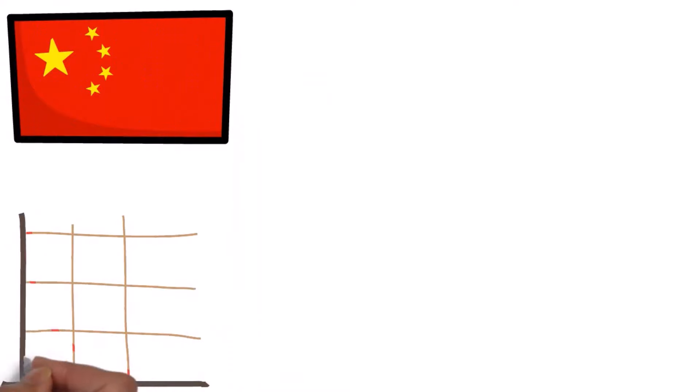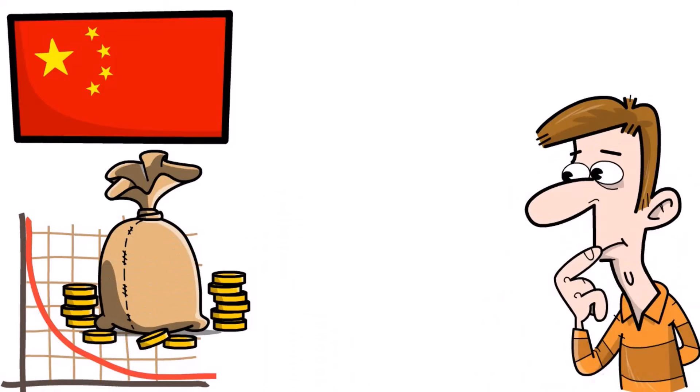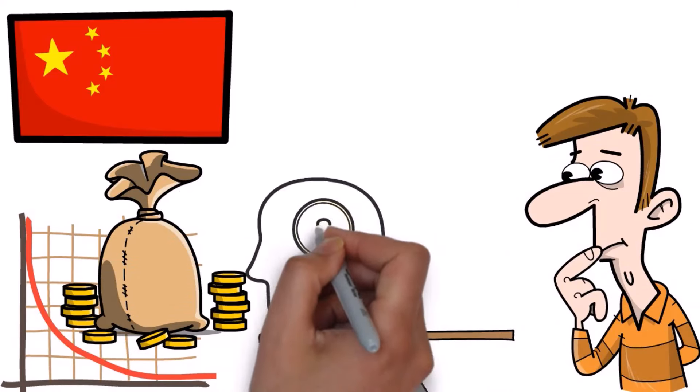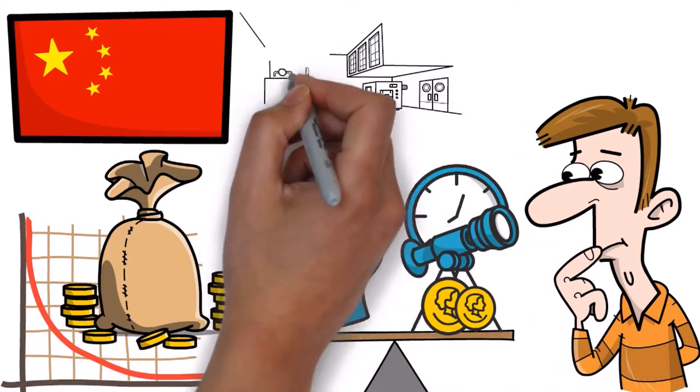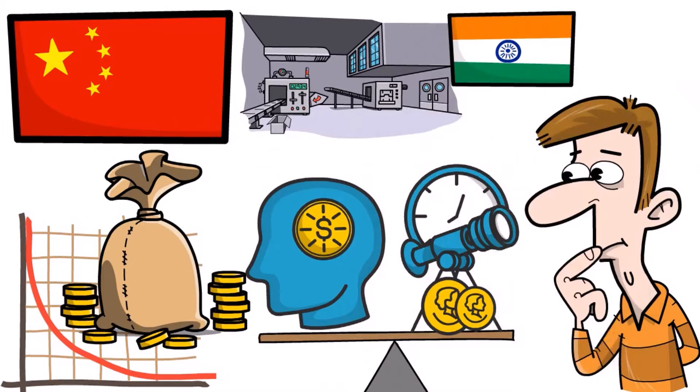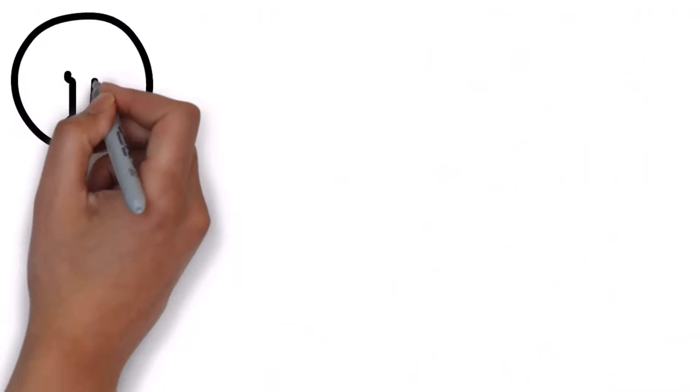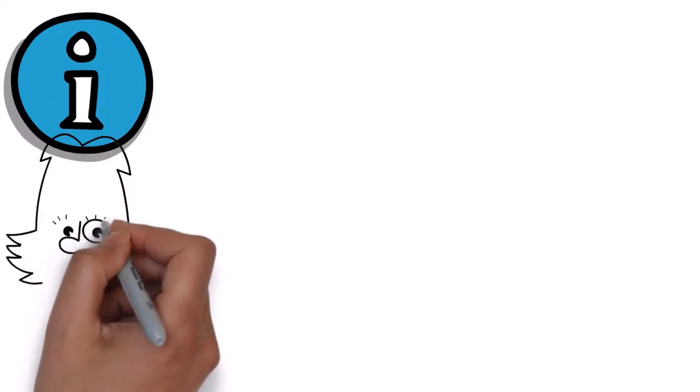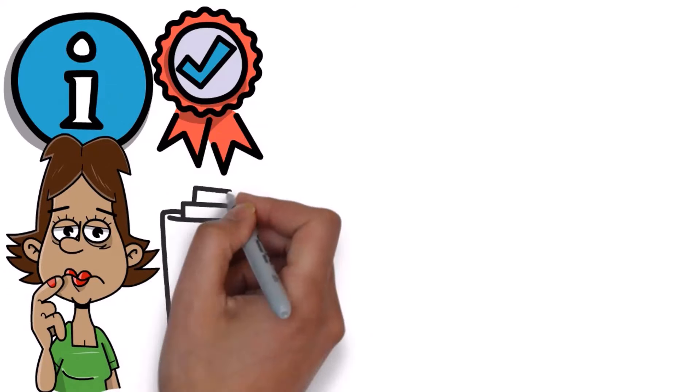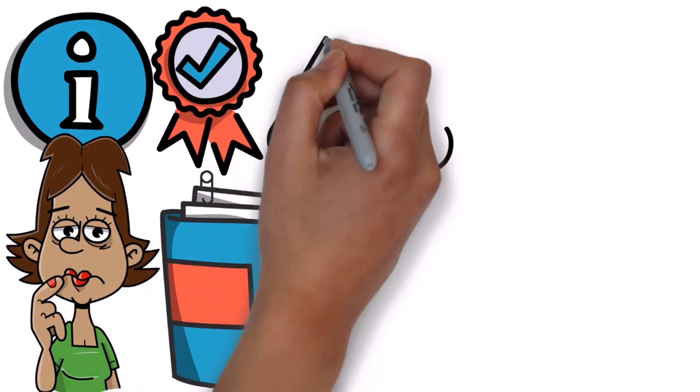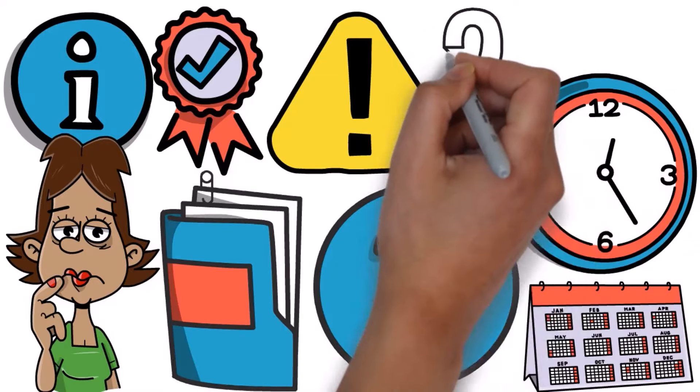Now, China is dealing with financial problems within its own country, and people are worried about how stable its economy is. Some rich Chinese people are looking for opportunities in other countries because they want a more secure future. Also, many companies that used to make things in China are moving to other places like India and Vietnam, which is causing more trouble for China's economy. All of these things, along with other reasons, have made people doubt whether the Belt and Road Initiative will be successful. It was once seen as a huge project, but now it's facing a lot of challenges and uncertainties. The problems along the way have raised questions about whether it can really work in the long run. We'll have to wait and see what happens.